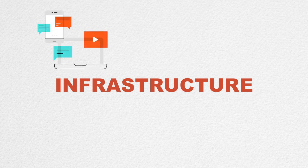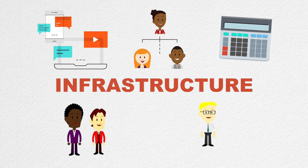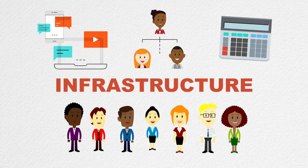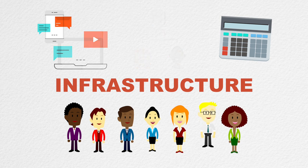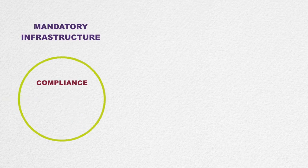Next, let's look at infrastructure. What kind of technology infrastructure do you have? How do you manage human resources and accounting? What does your board of directors look like? There are three ways to look at infrastructure: first, the mandatory stuff — compliance, a board of directors, all the things you are required to have in place to operate as a nonprofit.